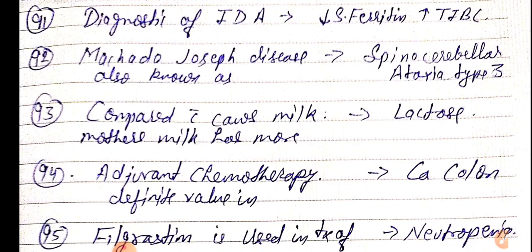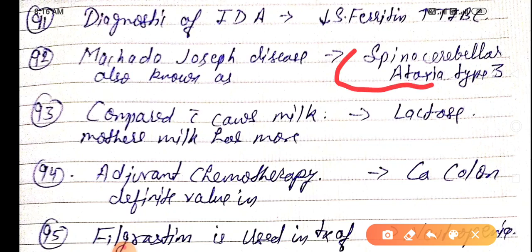Machado-Joseph disease is also known as spinocerebellar ataxia type 3. Compared with cow milk, mother's milk has more lactose.